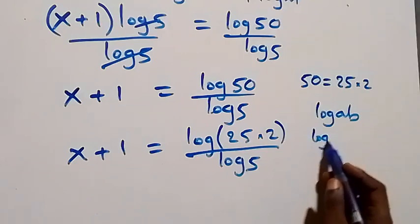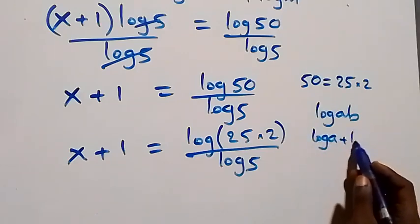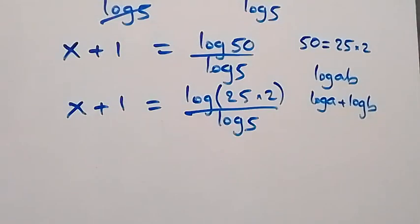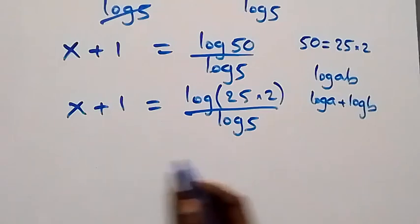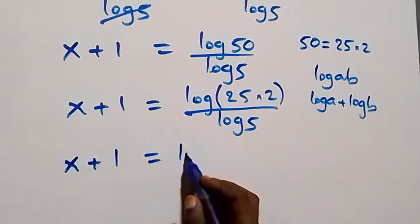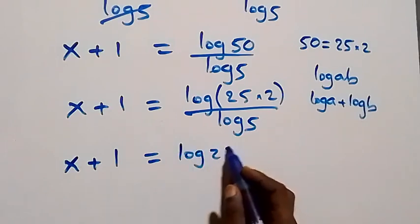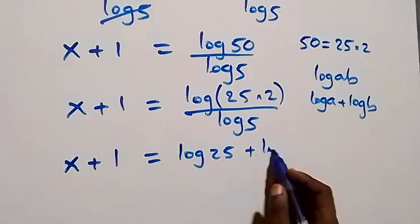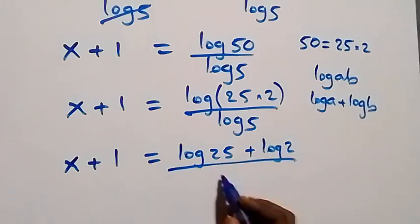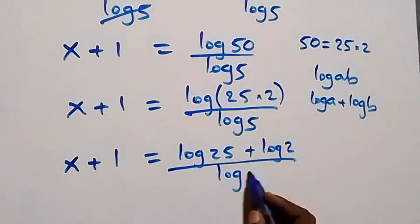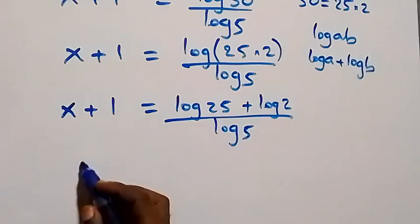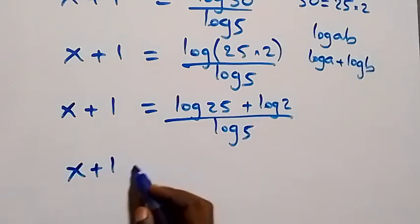Applying the product rule, we have x plus one now equals log 25 plus log 2, all over log 5. Separating this into two fractions, we have x plus one equals log 25 over log 5 plus log 2 over log 5.